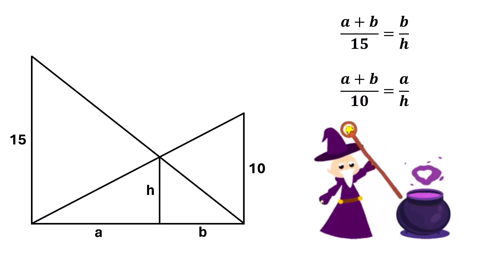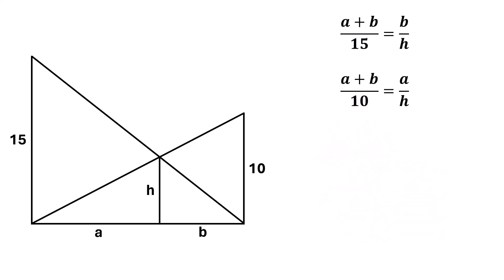Now, here comes the magic. Add both these equations. We get A plus B over 15 plus A plus B over 10 is equal to A over H plus B over H. Taking common A plus B from left side,